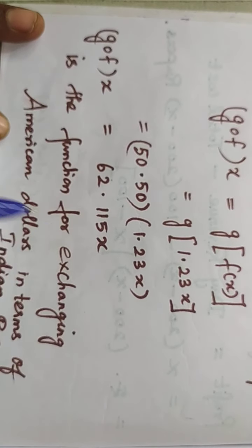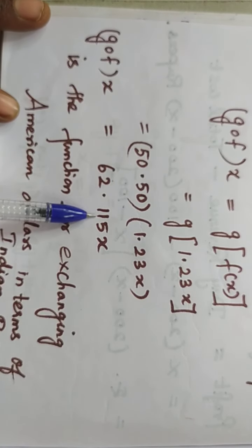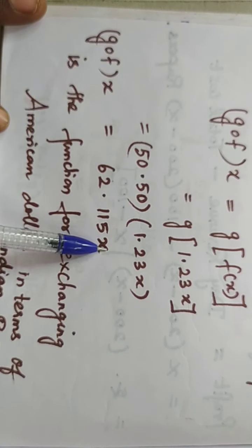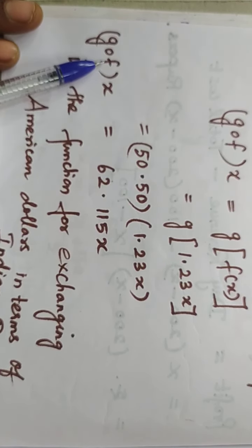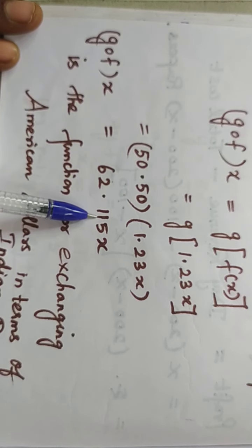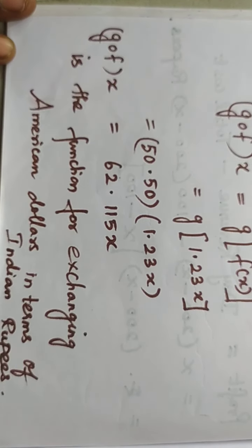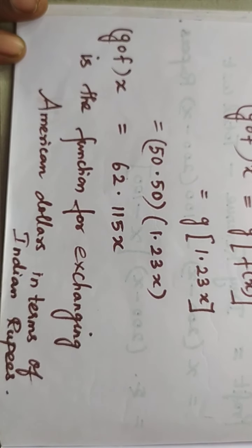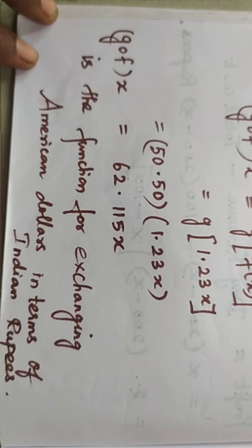Multiply to get 62.115x. So g composite f of x = 62.115x. This is the function for exchanging American dollar in terms of Indian rupee. I hope you understand this sum, students. Please subscribe to my channel. Thank you.